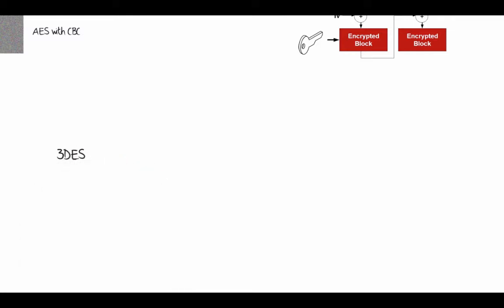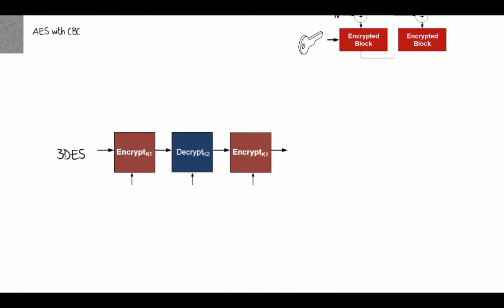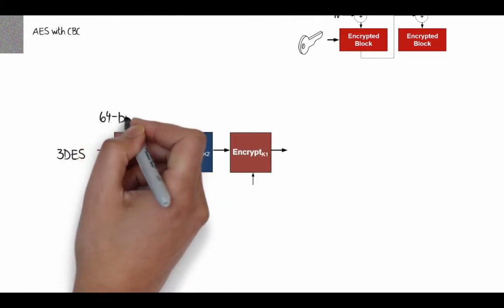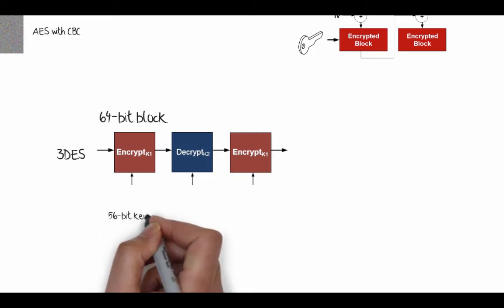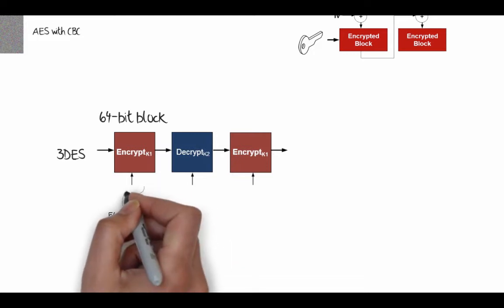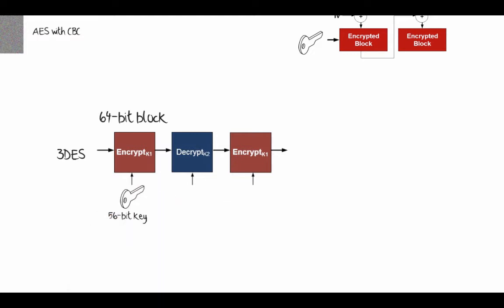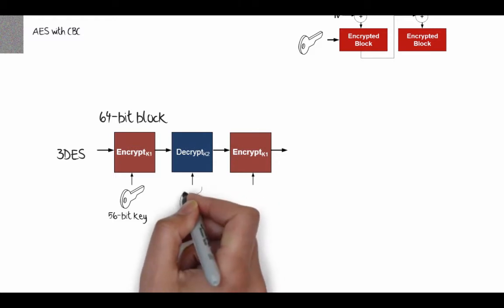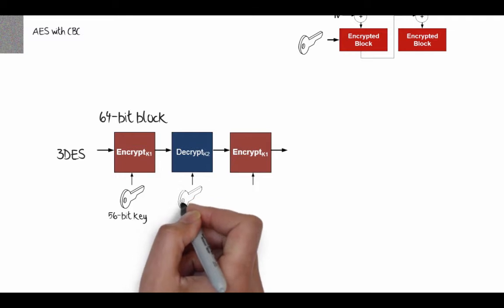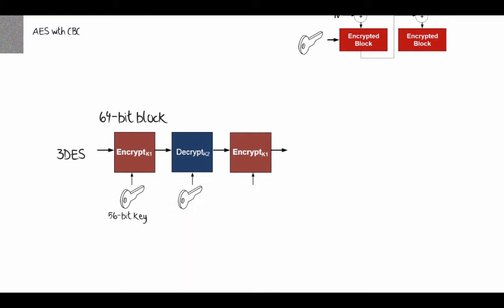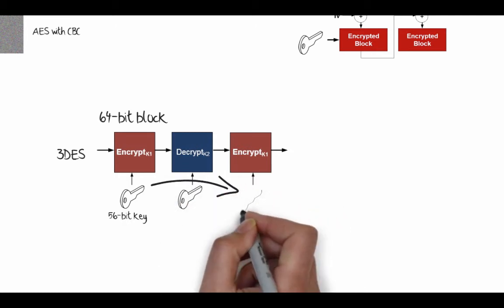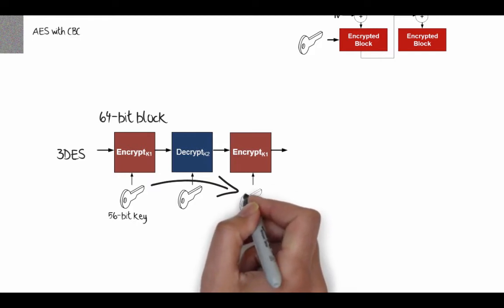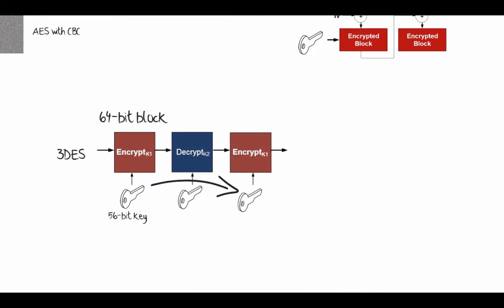3DES was based on the original DES standard, which only used 56 bits and needed to be made more secure. It uses two keys: one key to encrypt and the next key to decrypt, giving a 112-bit equivalent key. Then the first key is used again to encrypt. 3DES has three stages, which obviously makes it slower than more modern standards.